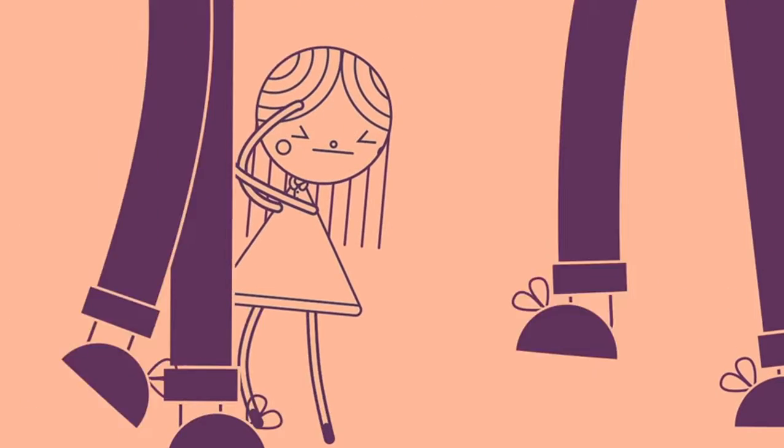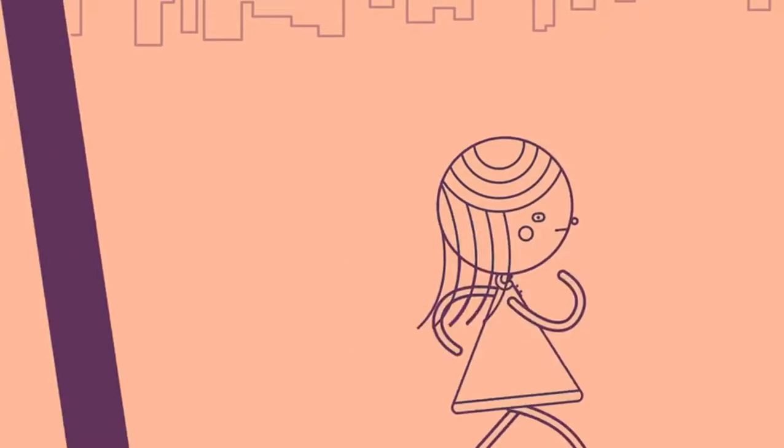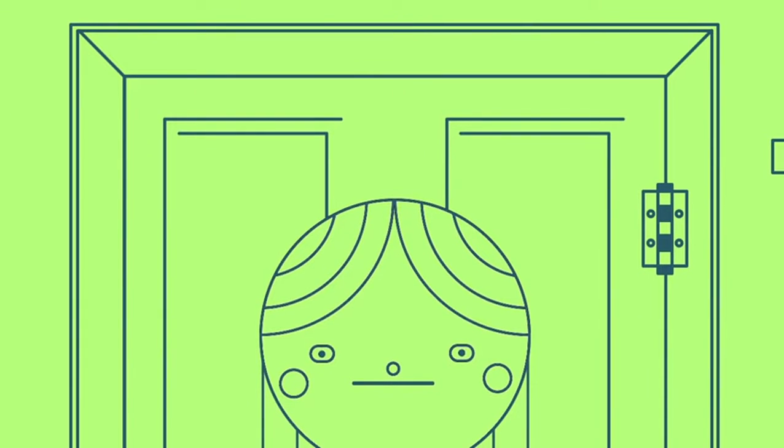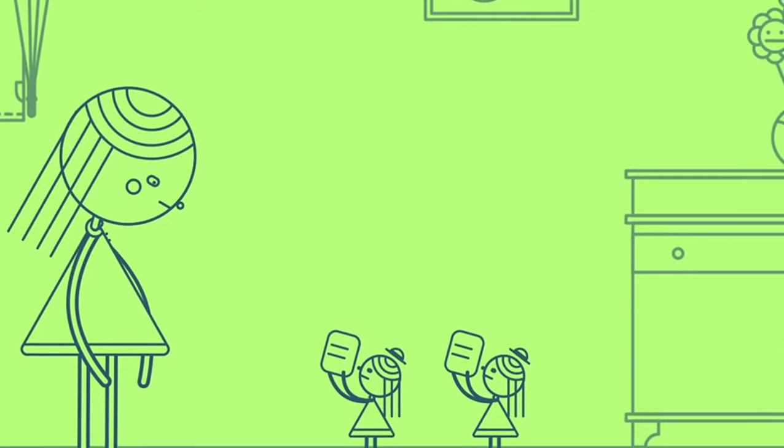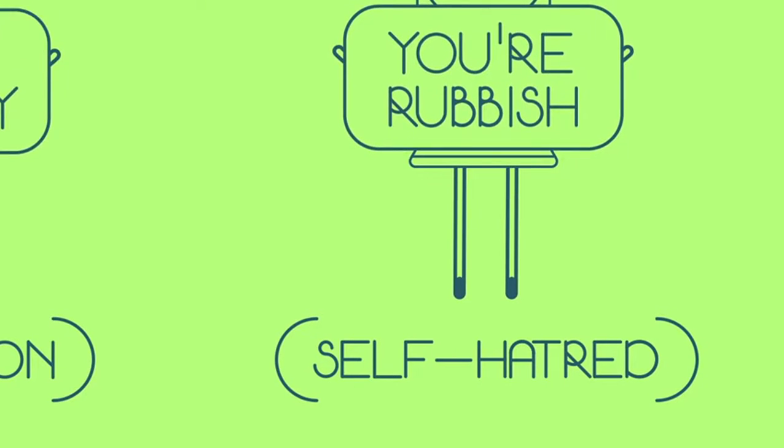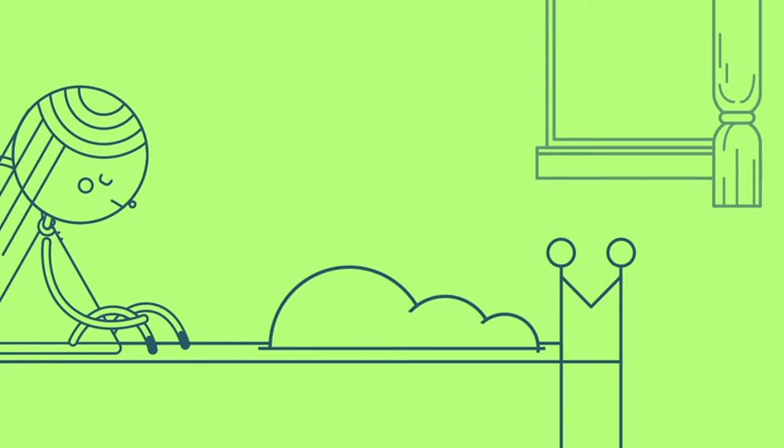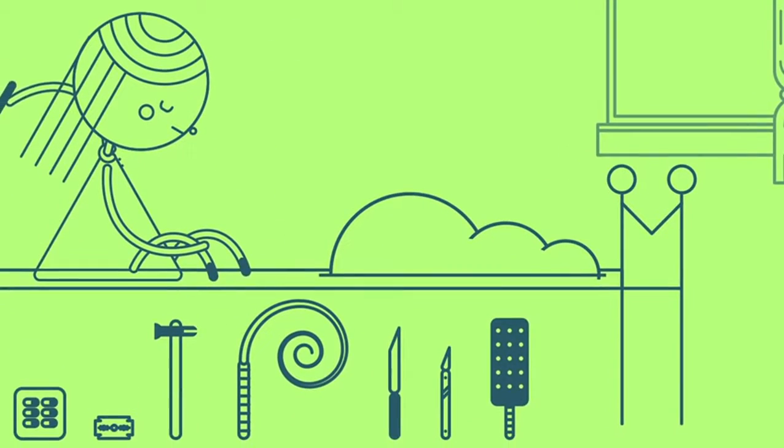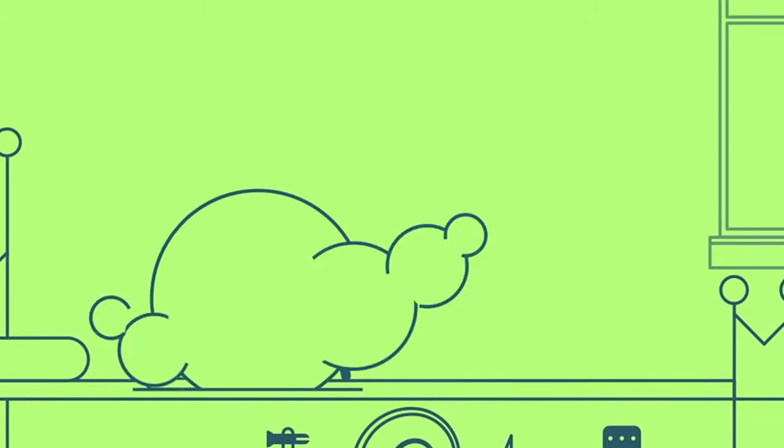To survive in this high-pressured, crazy world, most of us have to become highly adept at self-criticism. We learn how to tell ourselves off for our failures and for not working hard or smart enough. But so good are we at this that we're sometimes in danger of falling prey to an excessive version of self-criticism, what we might call self-flagellation, a rather dangerous state which just ushers in depression and underperformance. We might simply lose the will to get out of bed.